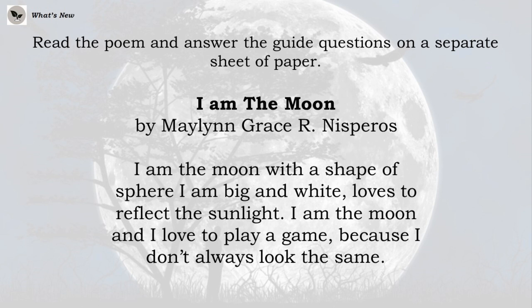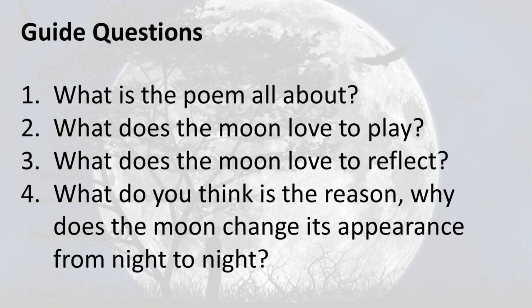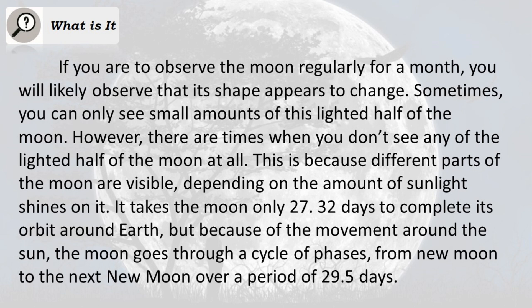Read the poem and answer the guide questions on a separate sheet of paper. 'I am the moon. I am the moon and I love to play a game, because I don't always look the same. In the beginning I am new, out of sight from all of you. Sometimes I'm a crescent up from here, smiling at you. Look up in a clear sky, you will see my friendly bright light. Can you guess what shape will I have when you see me tonight?' Guide questions: 1) What is the poem all about? 2) What does the moon love to play? 3) What does the moon love to reflect? 4) What do you think is the reason why the moon changes its appearance from night to night?